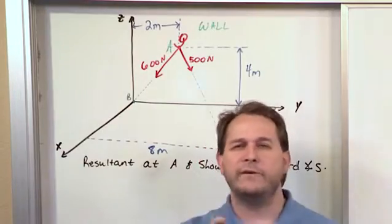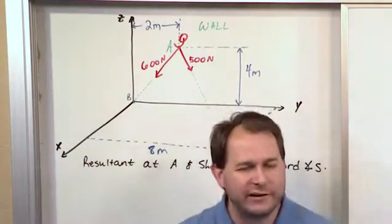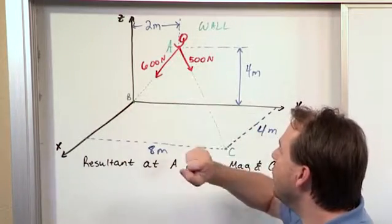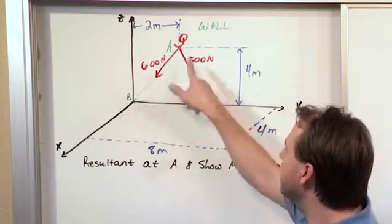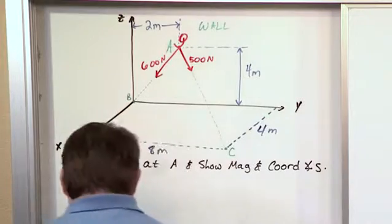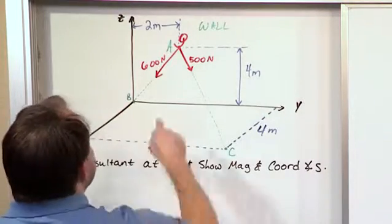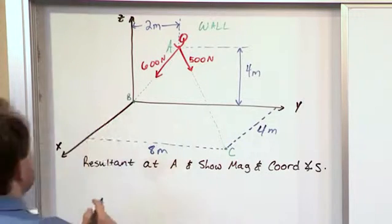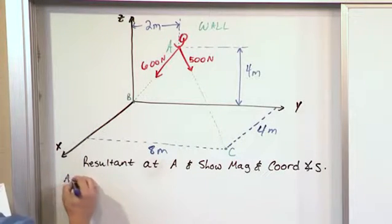So we're taking everything we've done in the past and we're kind of putting one additional layer on it, which is that this guy is not starting at the origin. It starts up here at some point A and it's going someplace else. So let's first work on figuring out how to define these vectors and figure out what those force vectors would be.